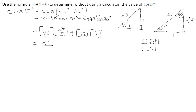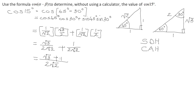Substituting gives: (√3)/(2√2) + 1/(2√2). Simplifying with the common denominator 2√2, we get (√3 + 1)/(2√2). We cannot stop there because we must never leave a surd in the denominator, so we rationalize by multiplying by √2/√2.